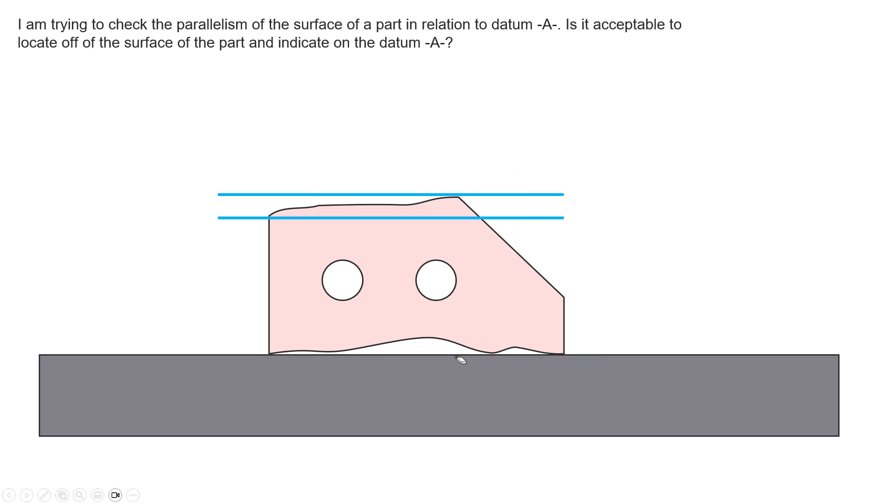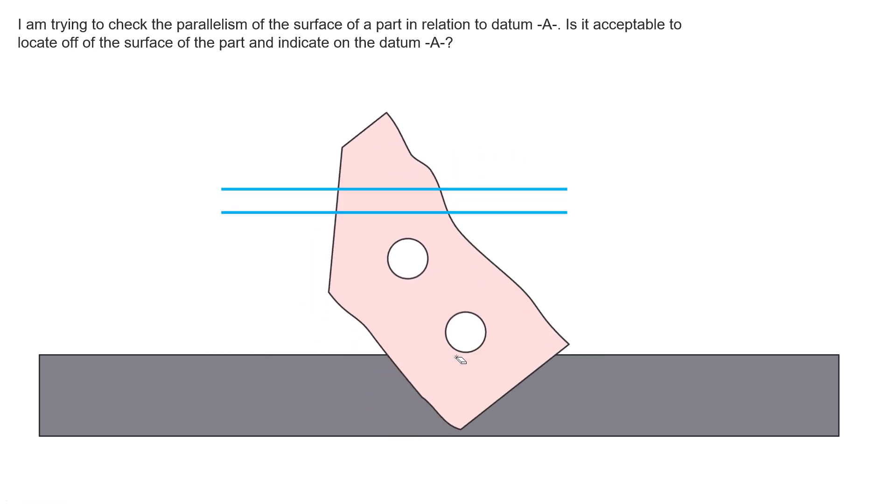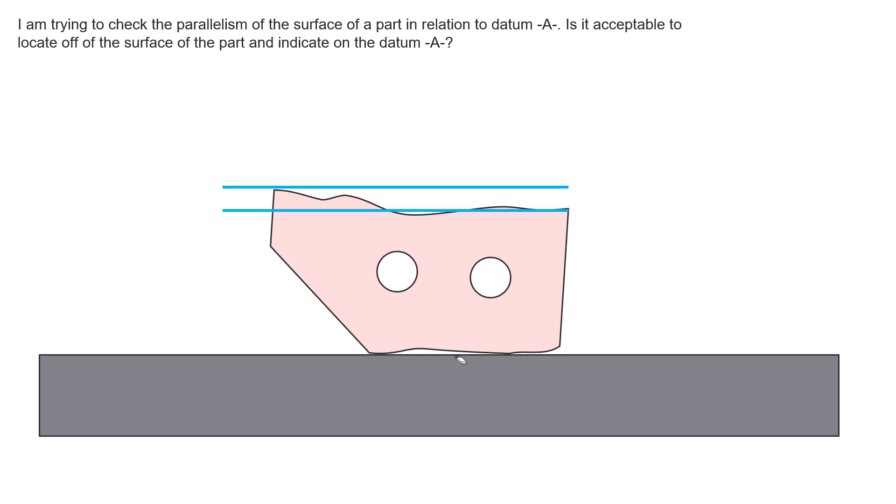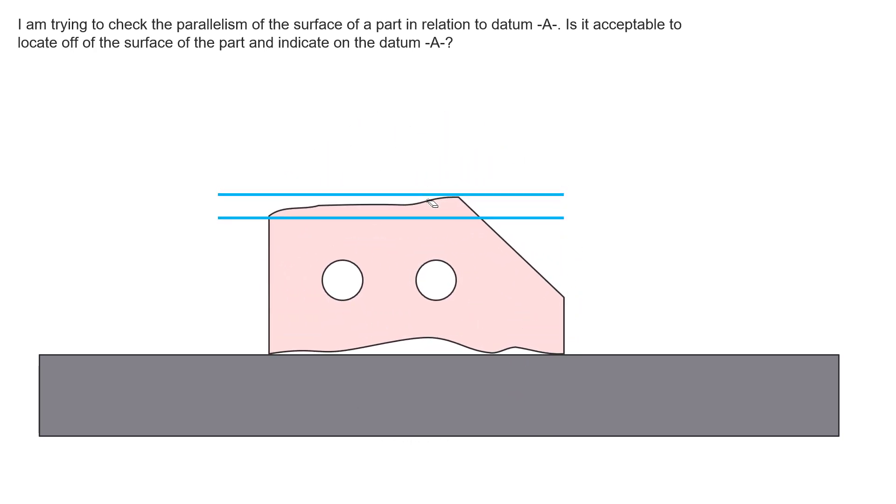But again, as per the question, if I were to simulate off the top surface and then indicate on the datum surface, we would see that from this point to this point we might have good orientation error. But there's a form error that would actually indicate our highest to lowest would be from here to here. And that would give us a false reading saying this is a bad part. When in reality, I just showed you in the previous slide, this was actually a good orientation.